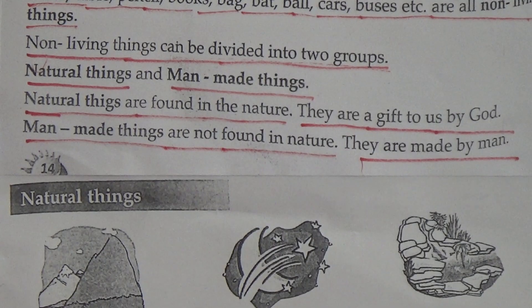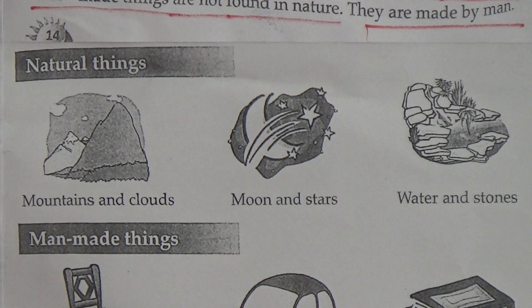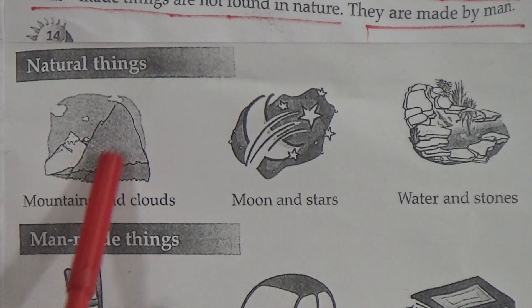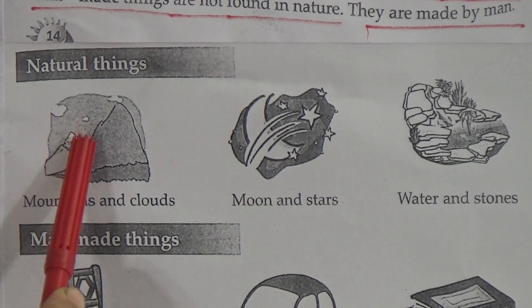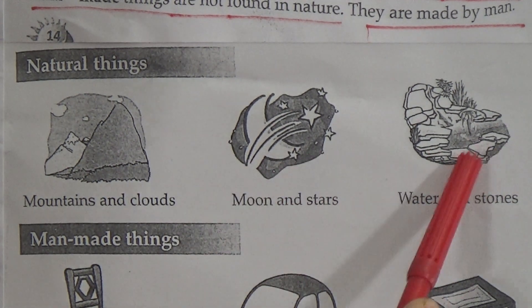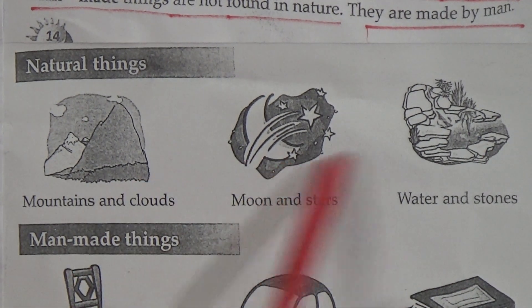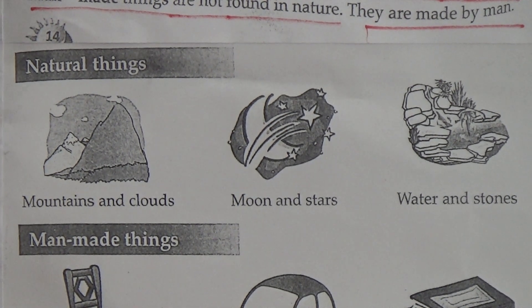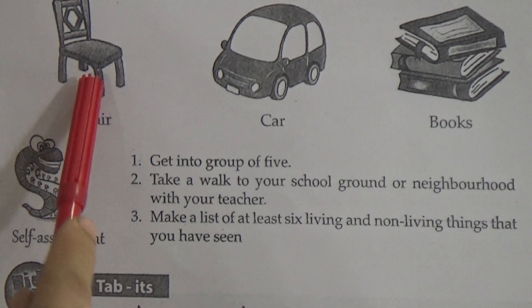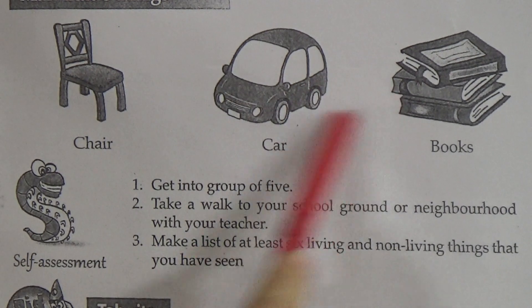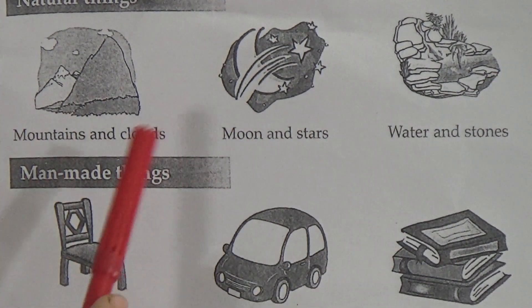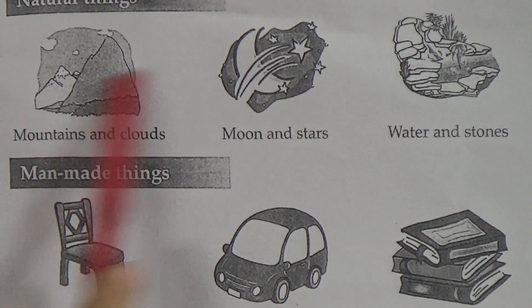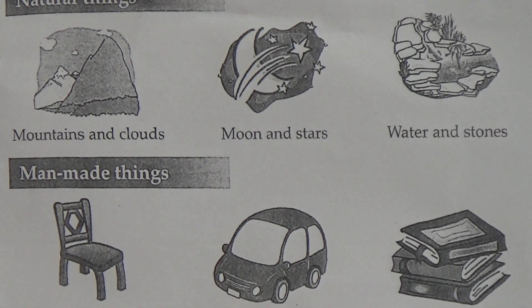Now come to the next page for examples of natural things and man-made things. Natural things: mountains and clouds, moon and stars, water and stones — all these are natural things. Man-made things: a chair, a car, some books — all these are man-made things. We cannot make mountains, clouds, moon, stars, water, or stones; they are a gift to us by God.